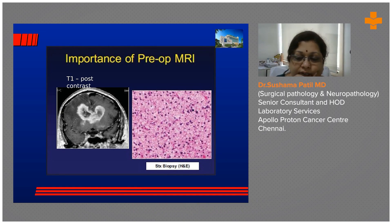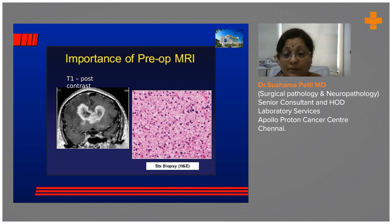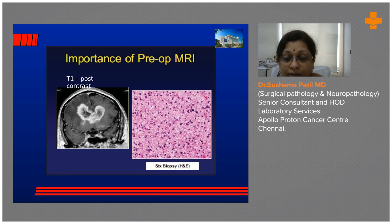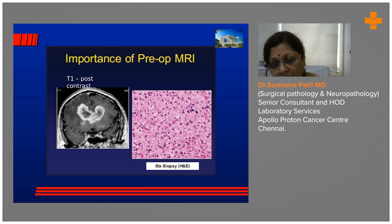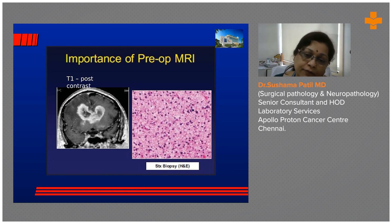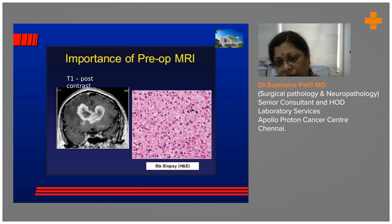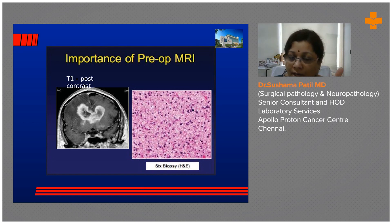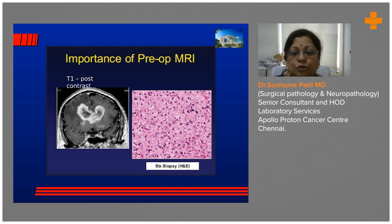This illustrates why MRI information is required when doing a frozen section. On frozen section you may see a hypocellular area and without MRI information one would call this a low-grade glioma. But comparing with the imaging, you can see a beautiful area of enhancement involving both right and left hemispheres — what we call a classical butterfly glioma — indicating this is a high-grade glioma, most likely a GBM.